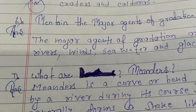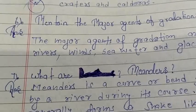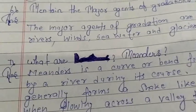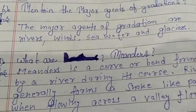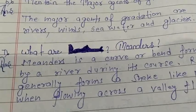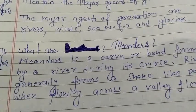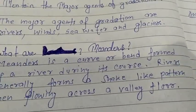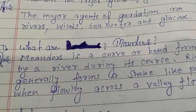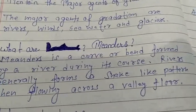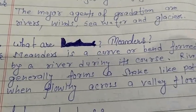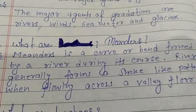What are meanders? Meanders is a curve or bend formed by a river during its course. Rivers generally form a snake-like pattern when flowing across a flood floor.